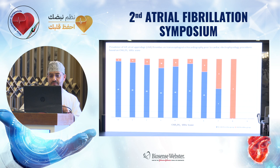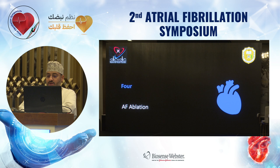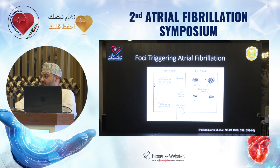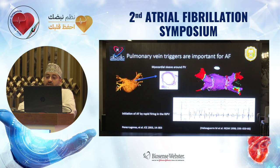Regarding the AFib ablation procedure — this is technical, so I'll be quick. We know that the triggers come from the pulmonary veins, as demonstrated by Haïssaguerre from 45 patients showing around 70 foci in AFib patients triggered from these veins. The standard procedure is to isolate the pulmonary veins; there are many ways of doing it.